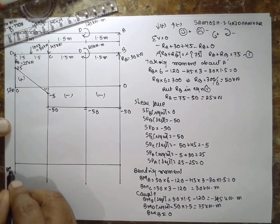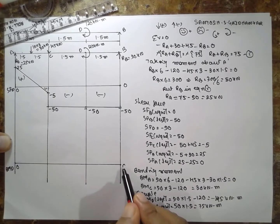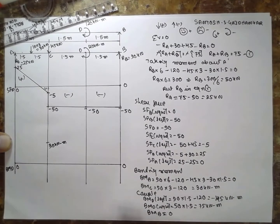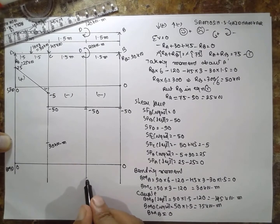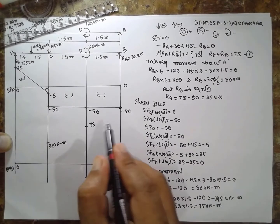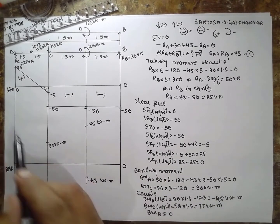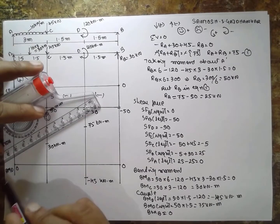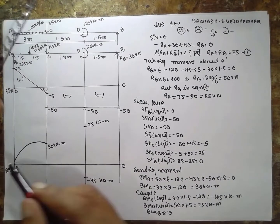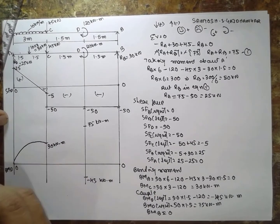Drawing the bending moment diagram: at A it is 0, at C it is 30 kN·m, at D there are two values — minus 45 kN·m and plus 75 kN·m — and at B it is 0. The region with UDL forms a parabola. Because the shear force diagram crosses zero (from positive to negative), we need to find the point of maximum bending moment.